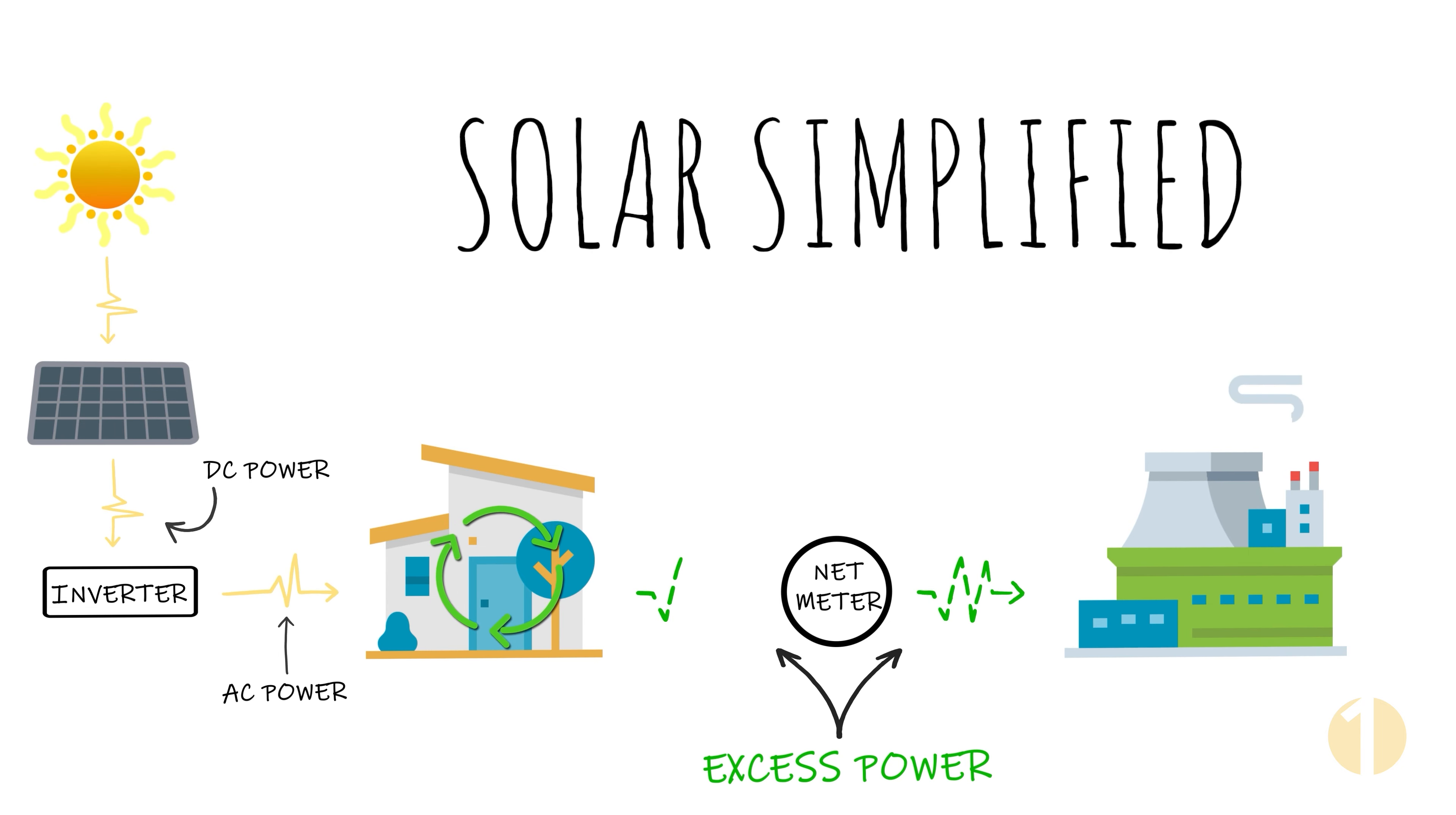Those credits can be used for whenever you use more power than you produce, such as in rainy seasons, where the sun doesn't hit your panels as much.